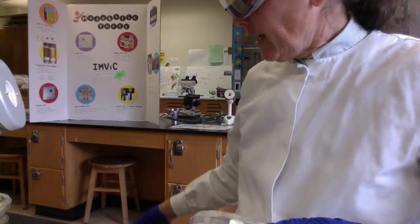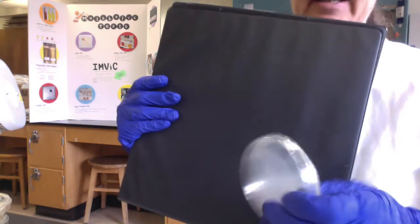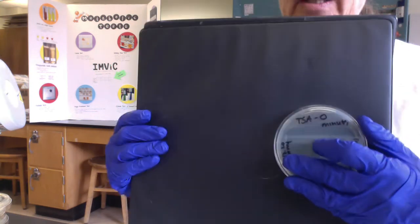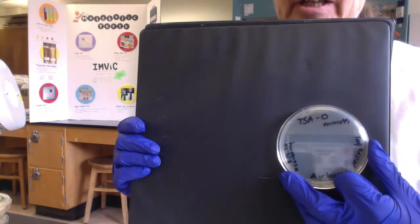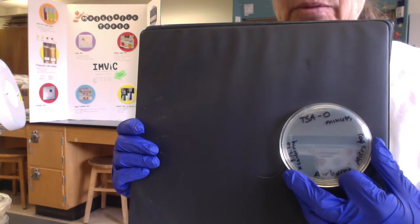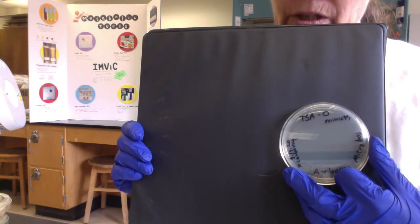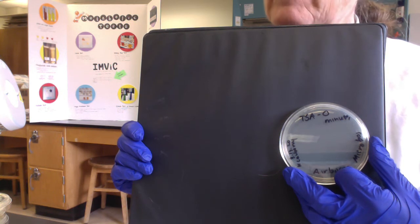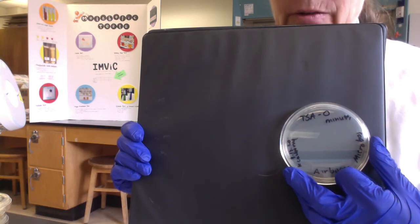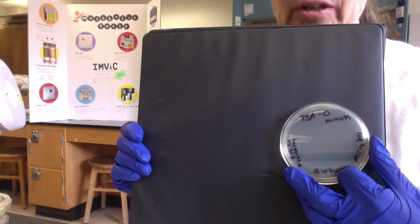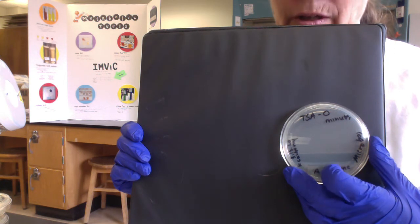The reason we did a zero-minute plate is this was our negative control. We had to make sure that the plates were sterile to start with, that the plates weren't already contaminated. So what was great was on both our TSA and Saborodextrose plate, the zero-minute plates, there was no colony growth. So that tells us our plates were sterile to start with.